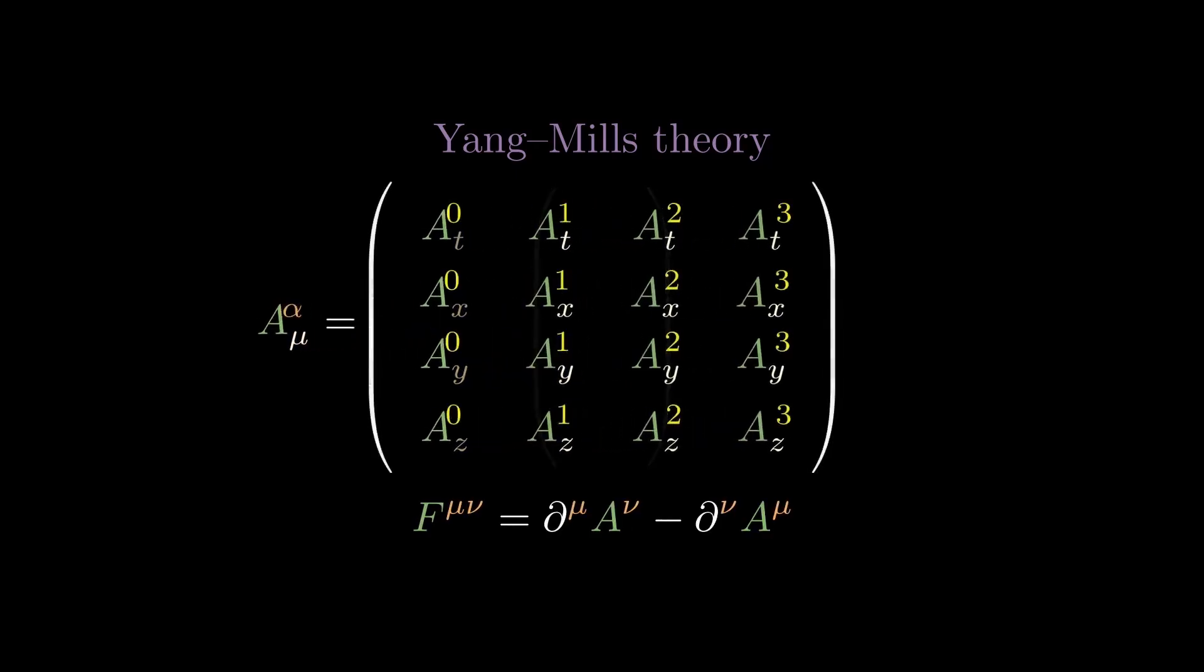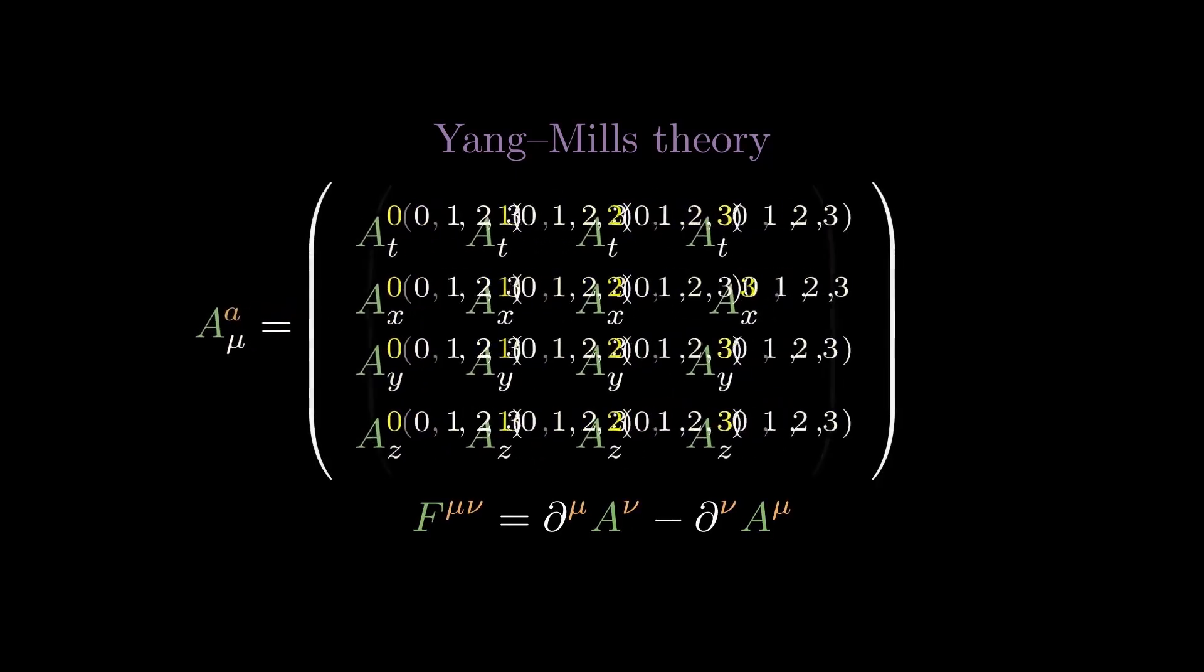This is what's known as Yang-Mills theory. In a nutshell, Yang-Mills theory generalizes the 4-vector potential field and its behavior in two ways. First, each component of the 4-vector can now be a number or a 4-vector or a 4-by-4 tensor, corresponding to the electromagnetic, weak, and strong fields respectively.